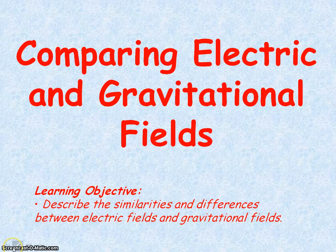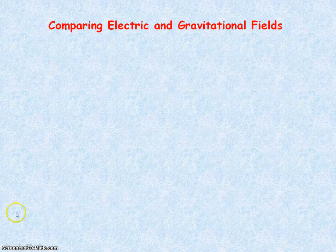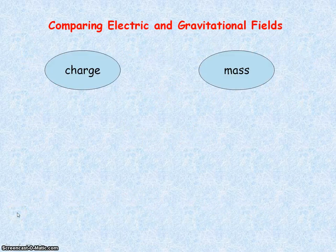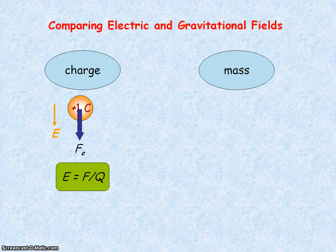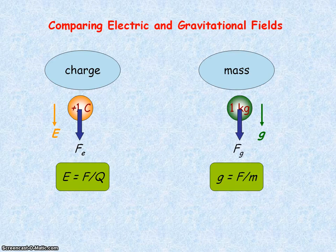We're going to be comparing electric fields with gravitational fields. Electric fields are due to objects with charge, whereas gravitational fields are due to objects with mass. Electric field strength is given by force per unit positive charge, whereas gravitational field strength is force per unit mass — so the field strength is equal to force per unit something.